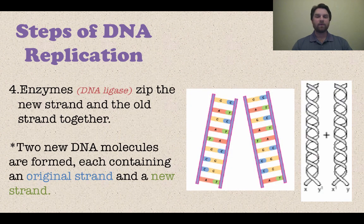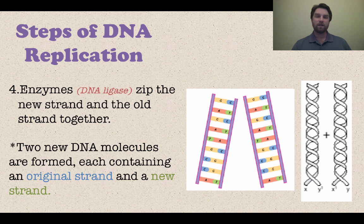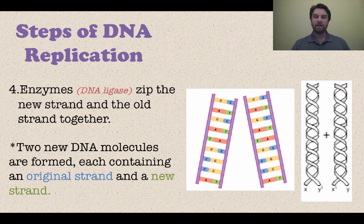In the fourth step, after we have copied everything and added all those nucleotides, we need some way to stick everything back together. We've broken it with helicase and added nucleotides with DNA polymerase, and now we use what's called DNA ligase — another enzyme that is going to glue or zip everything back together. It glues the new strand we just made to the old strand that it was copied from.